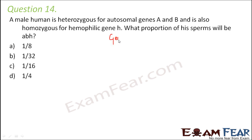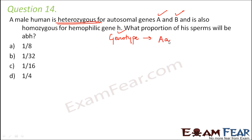Let us first find out the genotype of this human male. There are three genes involved: A, B, and H. A and B are autosomal genes, meaning they have nothing to do with the sex chromosomes. The male is heterozygous for both A and B. Heterozygous means one dominant and one recessive allele, so the genotype for A is Aa and for B is Bb.